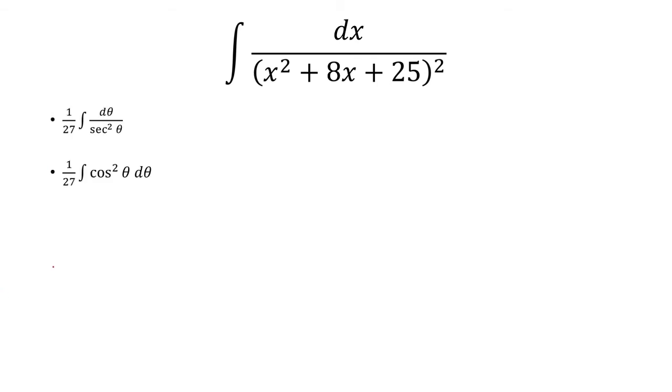Okay, 1 over secant squared is the same thing as cosine squared. And for that, I want to use this formula. So cosine squared is just 1 plus cosine 2 theta over 2.